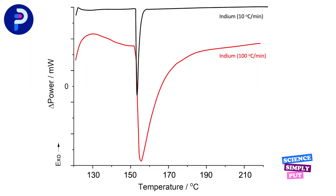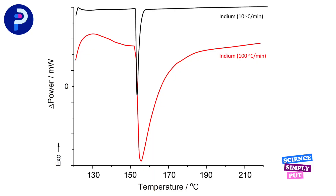Now let's look at these events in a DSC. These data, which show melting at two different heating rates, are the same as we looked at before. Faster heating rates make peaks larger and broader. But did you notice that the onset temperature in each case is exactly the same? Can you think why that would be?